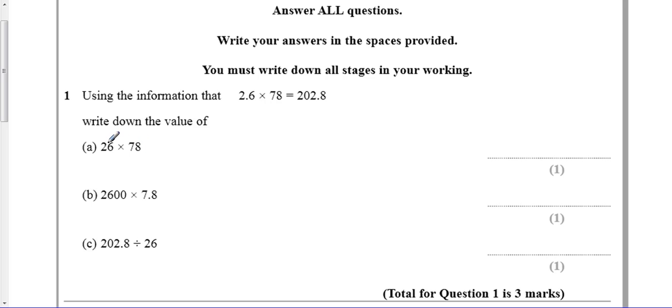All you've got to do is compare what they've given you here with what they've given you there. So this is 10 times bigger, it's gone from 2.6 to 26. The 78 stayed the same, so that tells me my answer is going to be 10 times bigger than my answer up here. So my answer really is going to be 2,028.